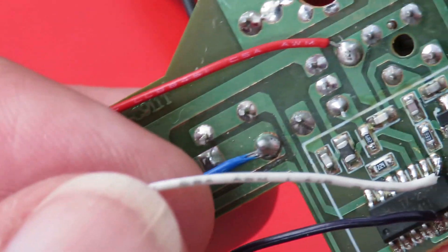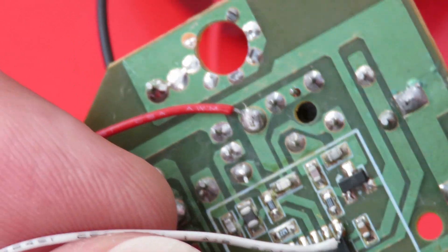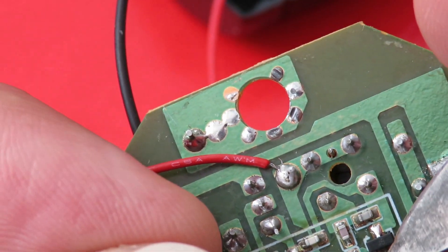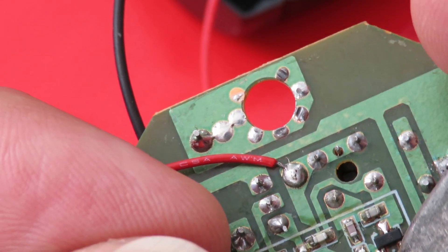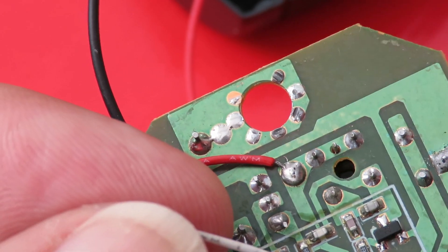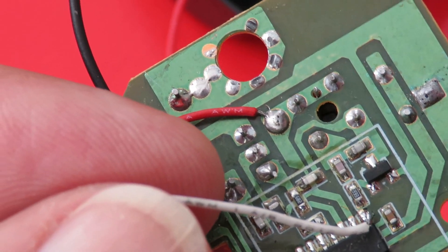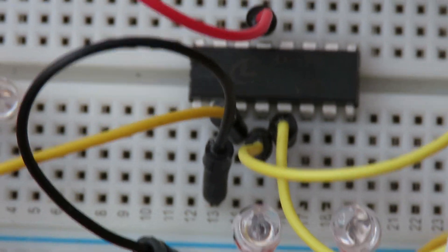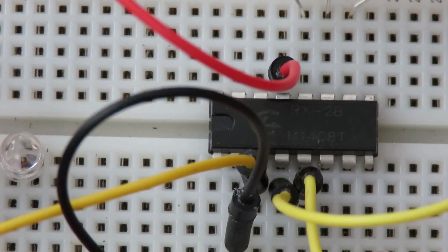And then that white one goes to pin 8, which is the signal output from the transmitter. The TX-2B chip, so that one is fed directly into my RX-2B chip at the moment.